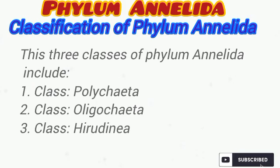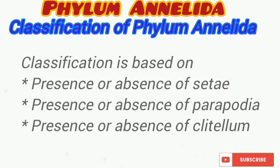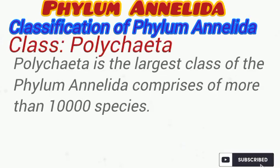The three classes of the phylum Annelida are class Polychaeta, class Oligochaeta, and class Hirudinea. Classification in Annelida is based on the presence or absence of setae, the parapodia — which are fin-like projections or appendages — as well as the presence or absence of the clitellum. Polychaeta is the largest class of the phylum Annelida, comprising more than 10,000 species.